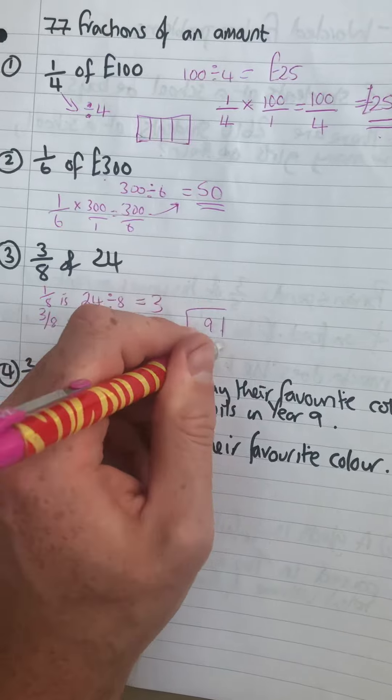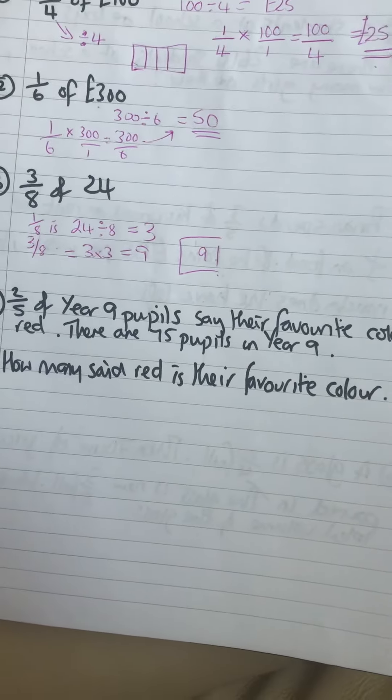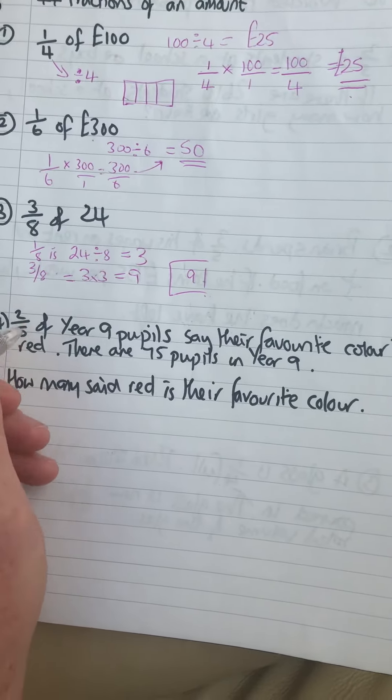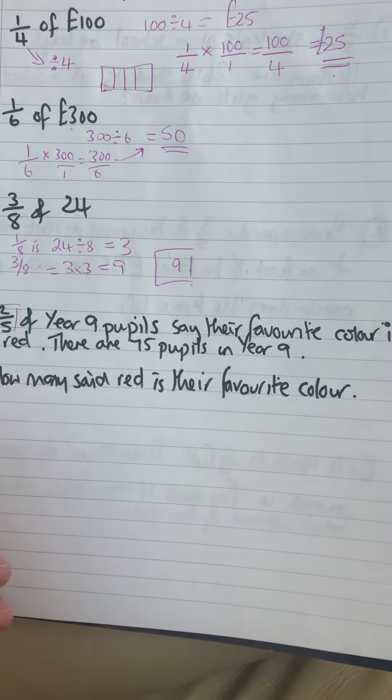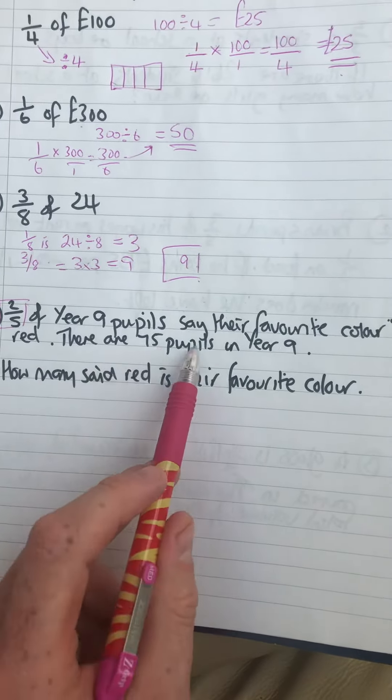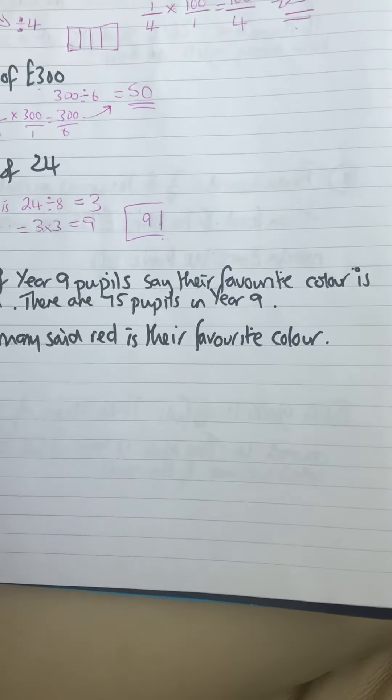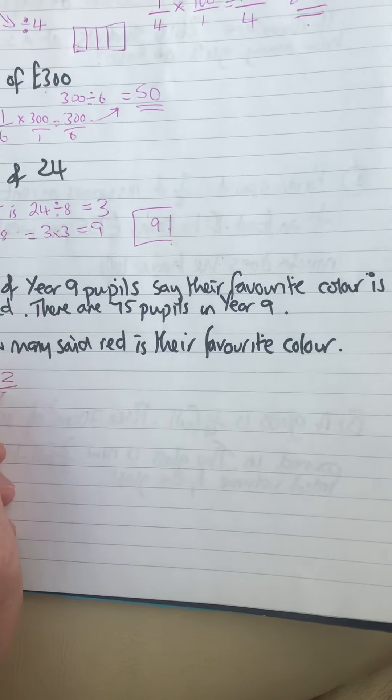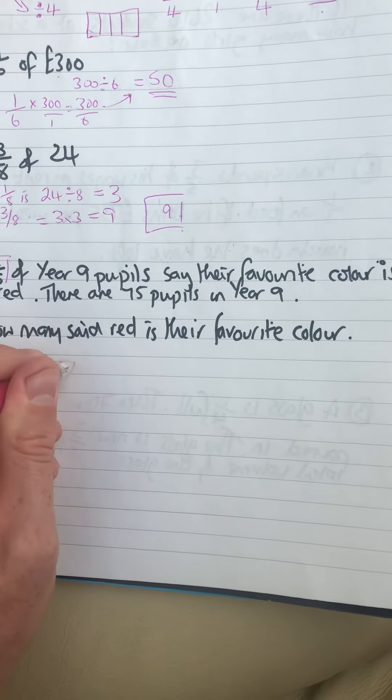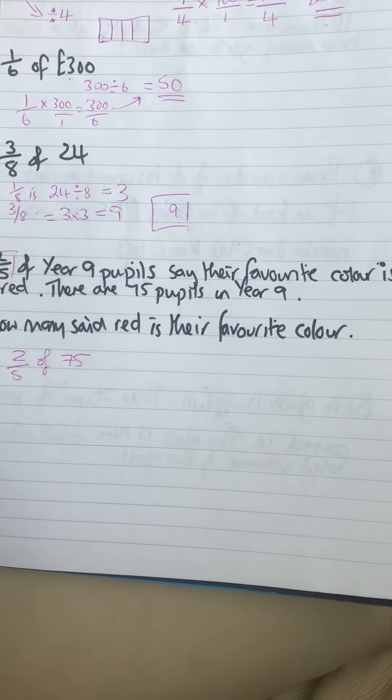And the fourth one. So just pick out the things that you need. Two fifths, the favorite colors red, and there are 75 pupils in year nine. So the question he's asking you to do is what's two fifths of 75 but they've put it into words to try and trick you.